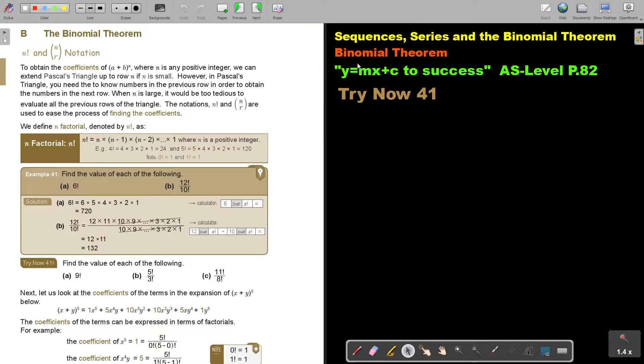In this video, we will start with the Binomial Theorem. You will find this on page 82 in the Namibia AS Level Mathematics textbook, Y equals MX plus C to success. This is the Binomial Theorem, n factorial and n over r notation. Now that n factorial is an exclamation mark, but you say n factorial.